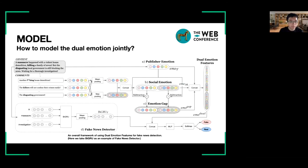We model dual emotion signals for fake news detection. We propose dual emotion features, which can leverage publisher emotion, social emotion, and the similarity and difference of the dual emotion. Here is an overall framework of using dual emotion features for fake news detection. It shows the process of obtaining dual emotion features and integrating them into an existing fake news detector as an enhancement to classify a given piece of news. Here, we take BiGRU as an example of fake news detector.